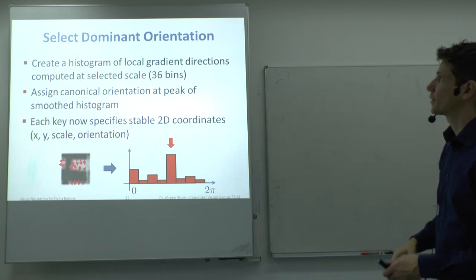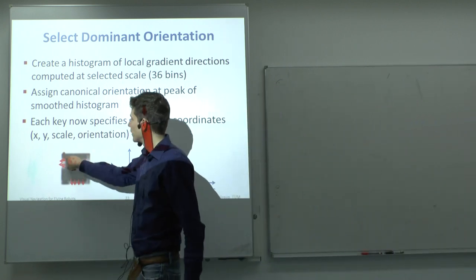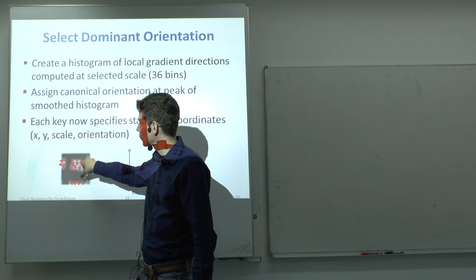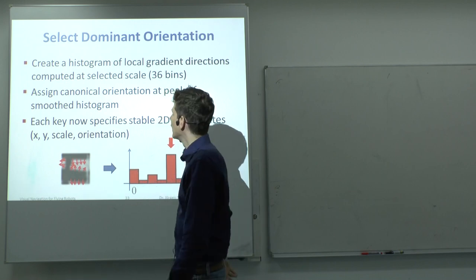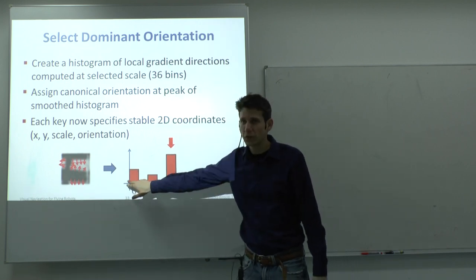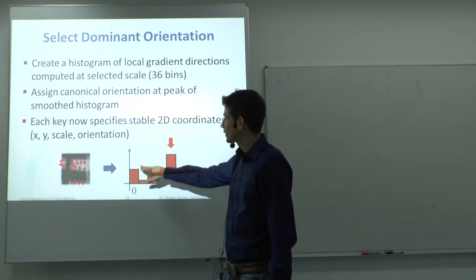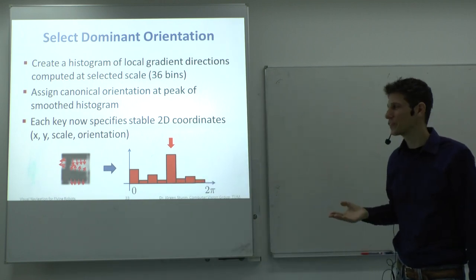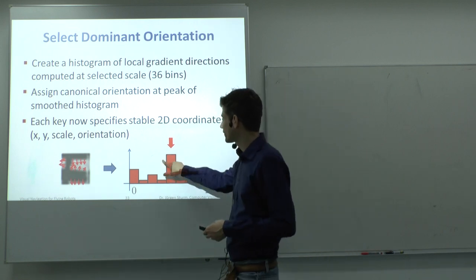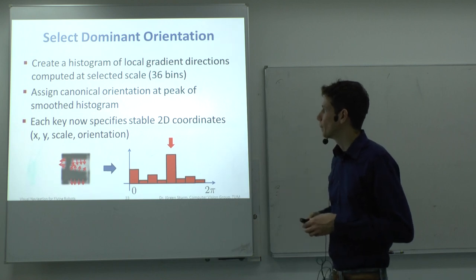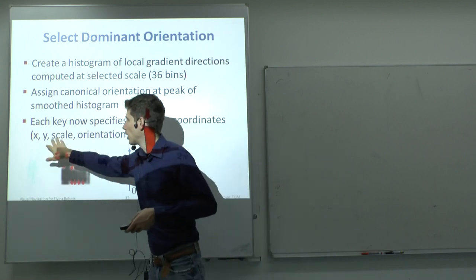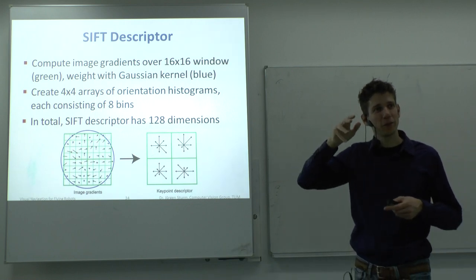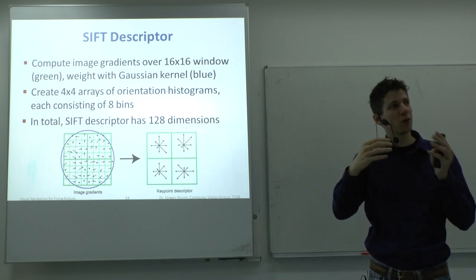For selecting the dominant orientation, SIFT extracts a small patch and computes image gradients. For each pixel, it computes the gradient direction theta. It builds a histogram from 0 to 360 degrees, counting how often each gradient direction is observed. The orientation with the most hits becomes the orientation of the patch, giving every keypoint an X, Y, scale, and orientation. SIFT then derotates the template so all patches have the same dominant gradient direction.